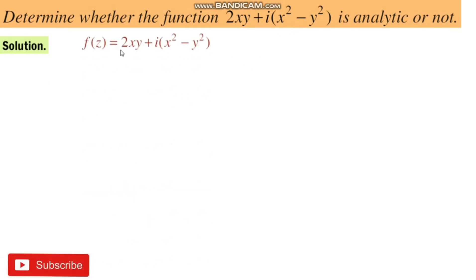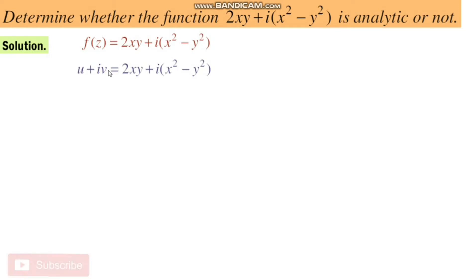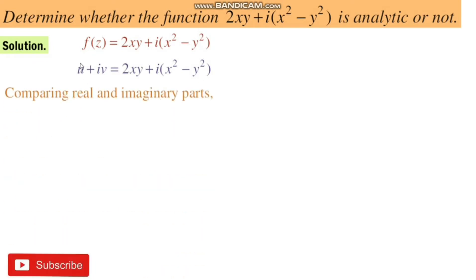Generally, we know that the Cauchy-Riemann conditions depend on the real and imaginary parts of the given complex-valued function. Let us assume that f(z) = 2xy + i(x² - y²). We know that the form of real and imaginary parts is u + iv, which equals 2xy + i(x² - y²). By comparison, we have the real part u = 2xy and the imaginary part v = x² - y².